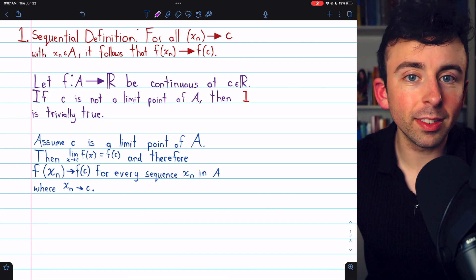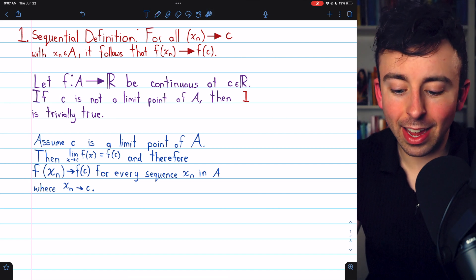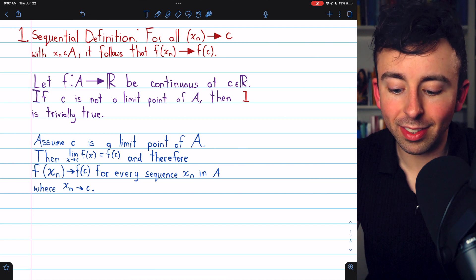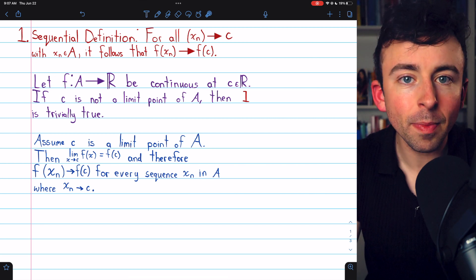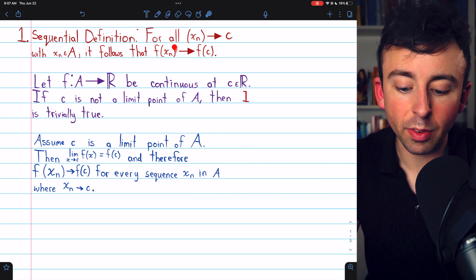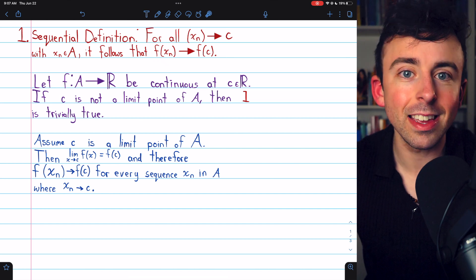So, if our function is continuous at a point c, then it is the case that for every sequence in the domain converging to c, it follows that the sequence of images under the function converges to the image of c under the function.